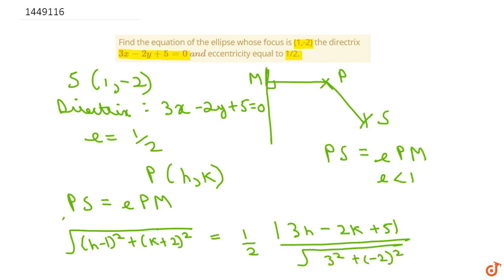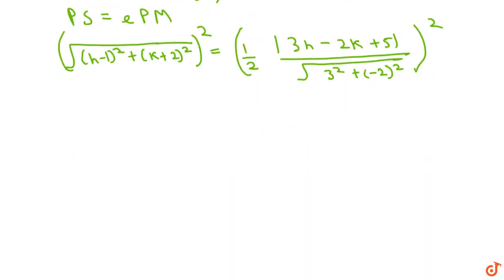So we can further simplify both sides. When we square both sides, this becomes (h - 1)² + (k + 2)² equals (1/2)² times (3h - 2k + 5)² divided by (√13)², which equals (3h - 2k + 5)² divided by 52.